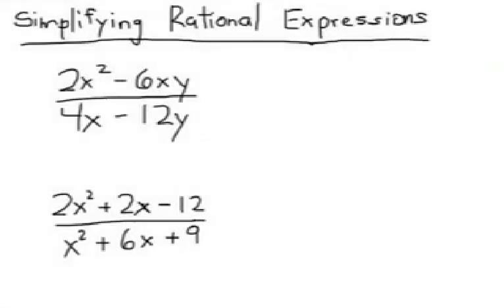This is simplifying rational expressions. The first step is to factor and break apart the numerator and the denominator of each fraction. So what I want to do is take a look at the common term here for the top numbers in the rational expression. I notice I can factor out a 2 and an x, which leaves me on the inside a binomial of x minus 3y.